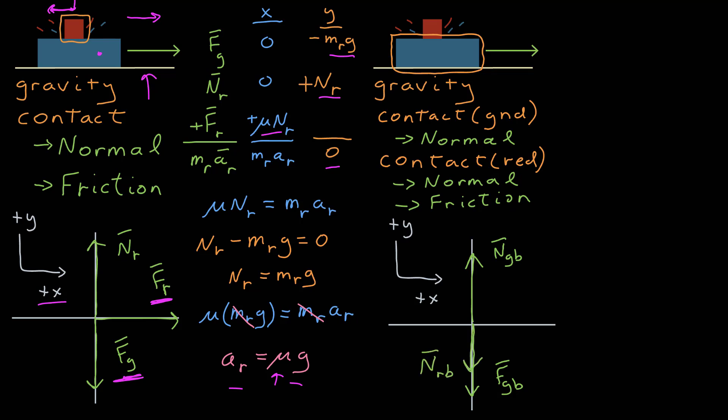There's the normal force of red on blue, and that points down because the agent, which is red, is above blue. And then there's a frictional force of red on blue.